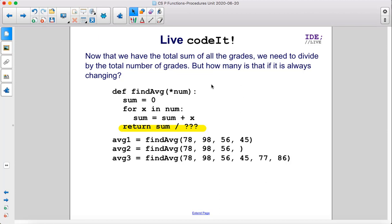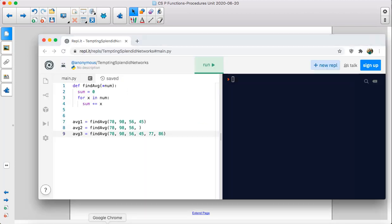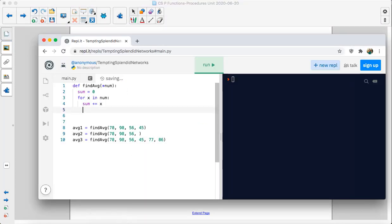Now that we have the total sum of all the grades, we need to divide by the total number of grades. But how many is that if it's always changing? So return sum divided by what?